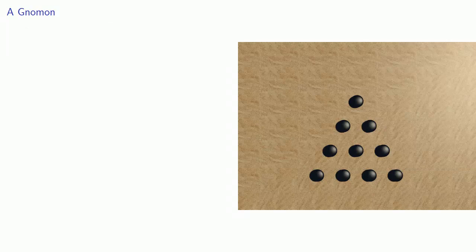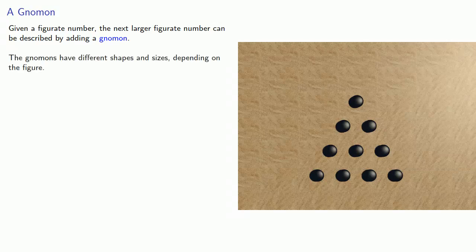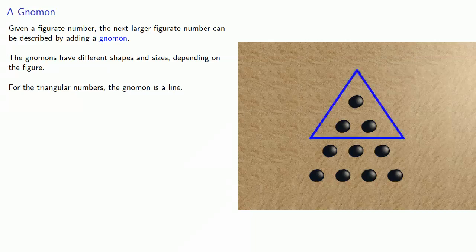Given a figurate number, the next larger figurate number can be described by adding a gnomon. The gnomons are going to have different shapes and sizes depending on the figure. So for the triangular numbers, if I want to add something to a triangular number to make it into another triangular number, the gnomon is going to look like a line. And so if I start with my triangular number three, I can add a gnomon, a line, to get my next triangular number, six.